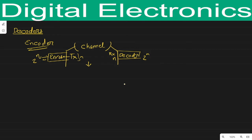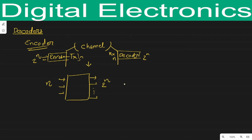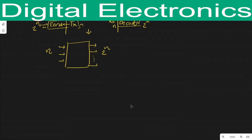So what is the definition of a decoder? A decoder is a combinational circuit that is used on the receiver side. It converts n number of inputs into 2 raised to power n number of outputs. Its operation is just opposite to the encoder's operation.